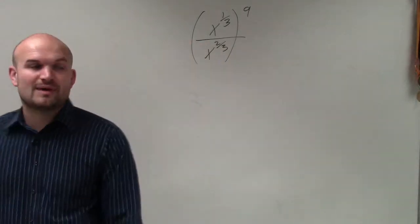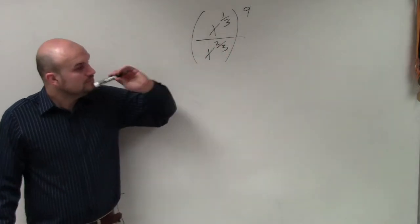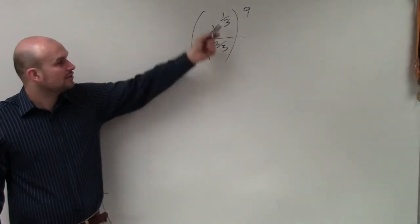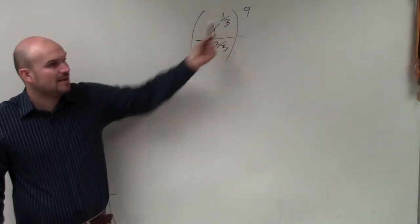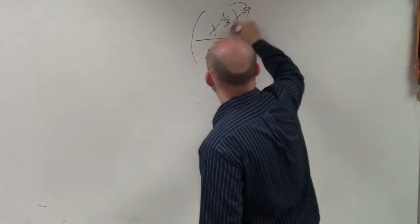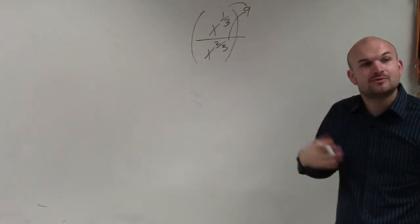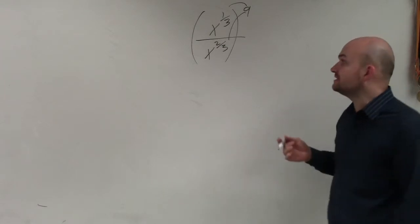And one of the rules that we went over with rational exponents is when you have rational exponents or a quotient raised to a power, we use what we call the power to quotient rule, where that 9 gets applied to everything in the numerator as well as everything in the denominator.